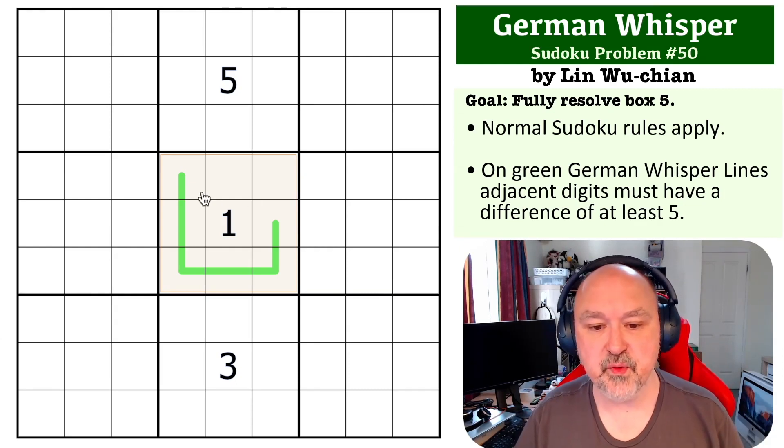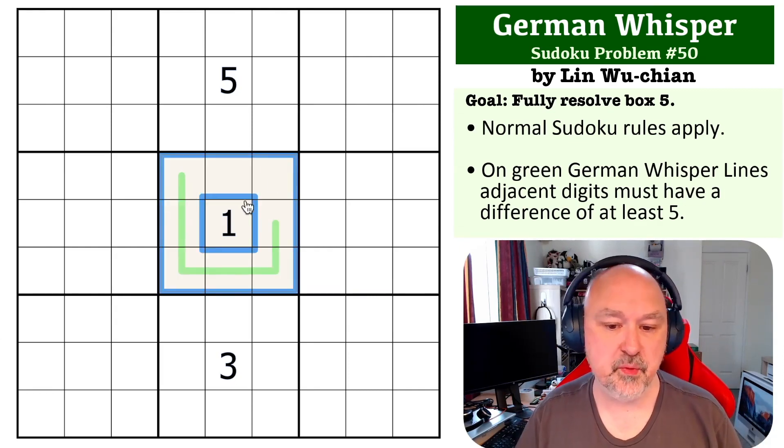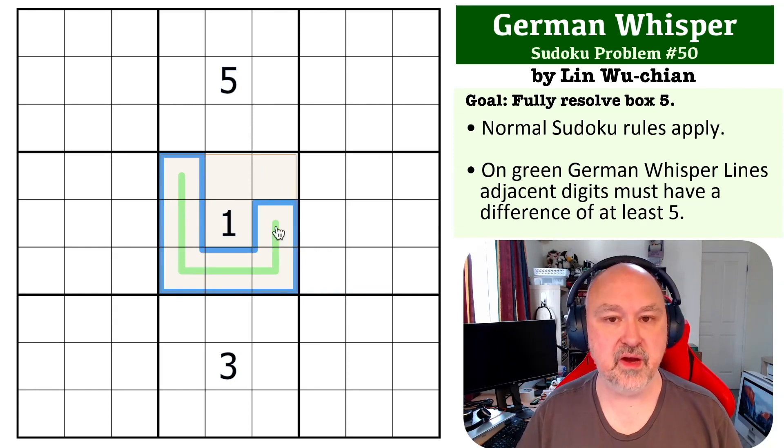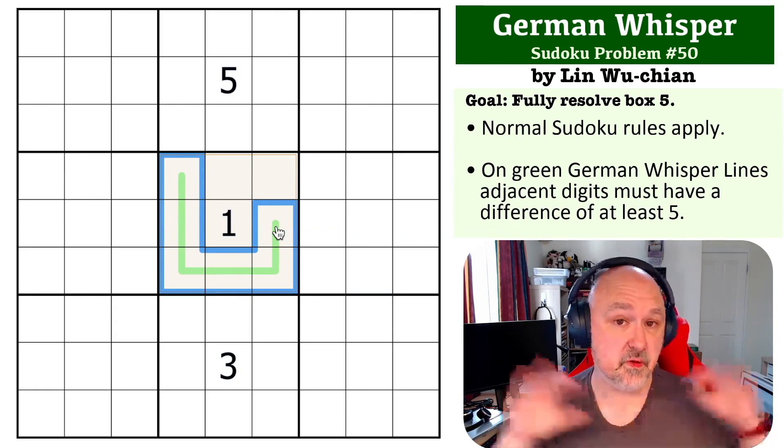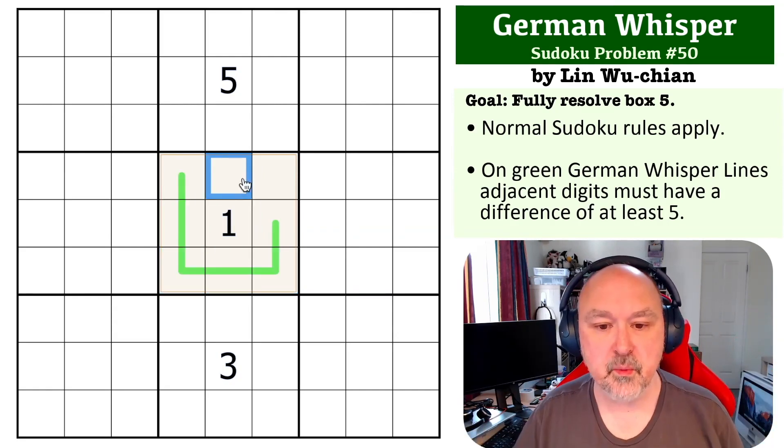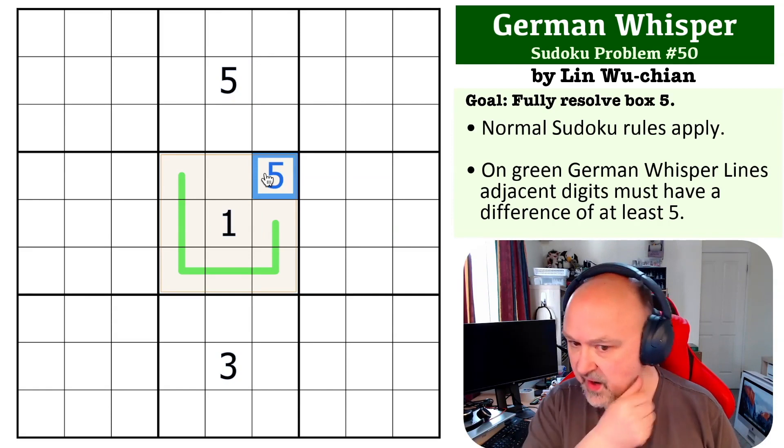So if we look at box five, where can we put five? Well, we can never put five on the line because five higher than five is ten, five lower than five is zero, and we'd have to move away from those. So we can't put five here because of the given five, so this becomes the five.